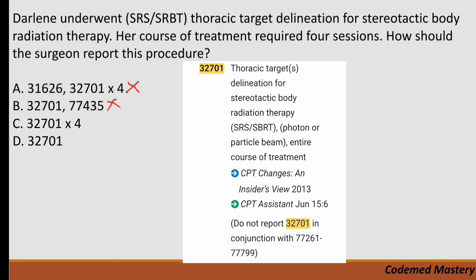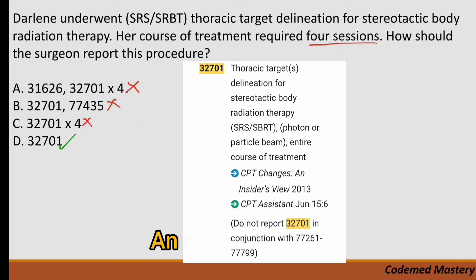Option C includes 32701 multiplied by the number of sessions — but we are not supposed to multiply 32701, because the code already covers the entire course of treatment. Even though there are four sessions, 32701 alone covers the full course, so we eliminate option C. Option D is 32701 alone — thoracic target delineation for stereotactic body radiation therapy, entire course of treatment. That is our correct answer.